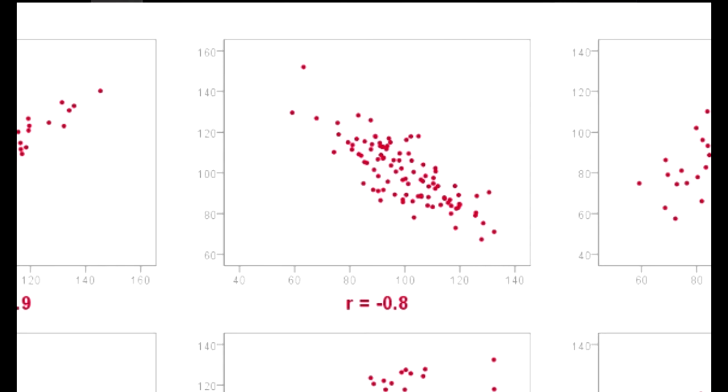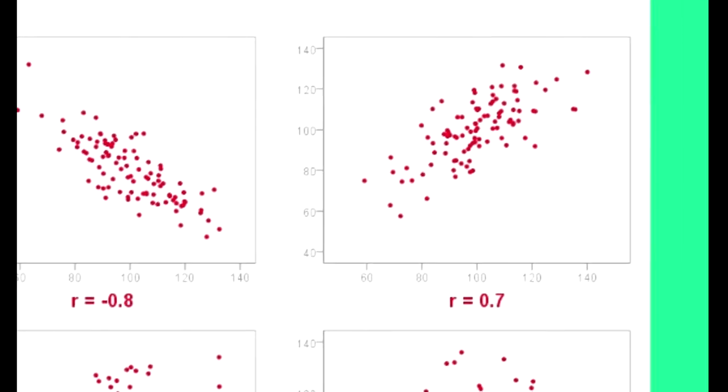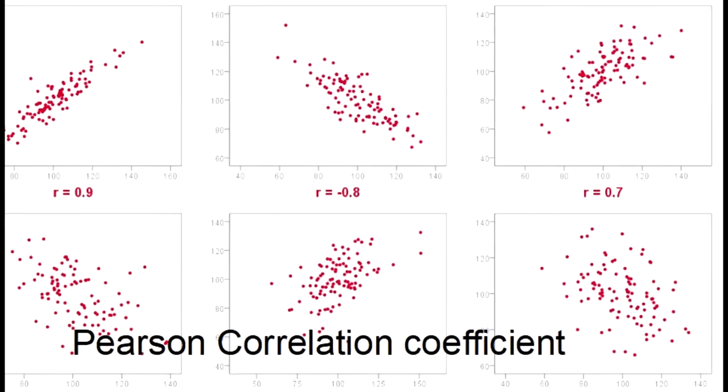Let's have a look at the third picture. Now, again, we have positive dependence. The bigger x, the bigger y. But r equals 0.7. If you compare first and third picture, then you can see there is more scattering of the points in this case.